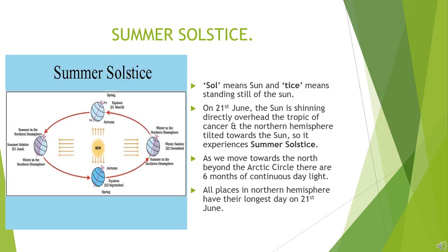Let us understand the meaning of solstice. Sol means sun and tis means standing still of the sun. On 21st June, when the sun is shining directly overhead the Tropic of Cancer and the northern hemisphere is tilted towards the sun, it experiences summer solstice. The number of hours of daylight goes on increasing as we move to the north, and beyond the Arctic Circle there are six months of continuous daylight. All places in the Northern Hemisphere have their longest day on 21st June — that is known as summer solstice.